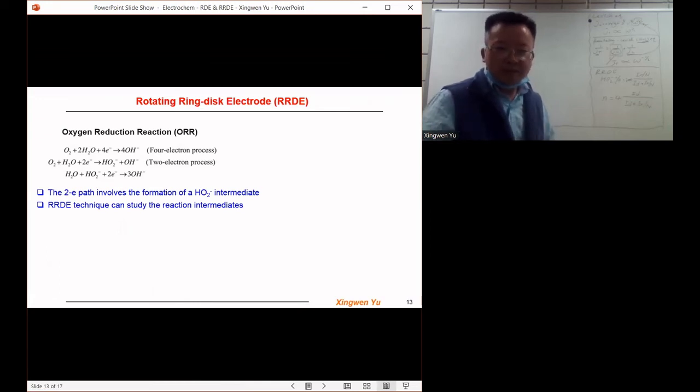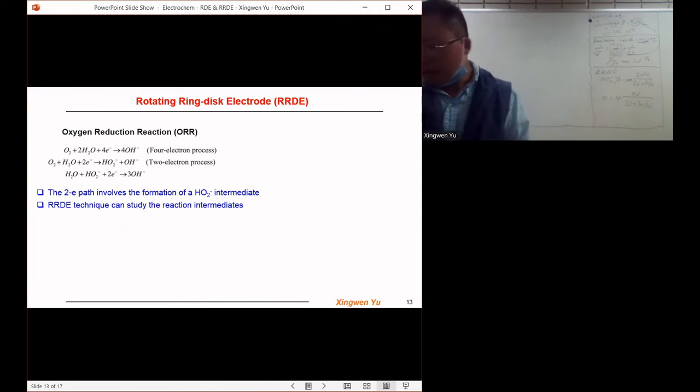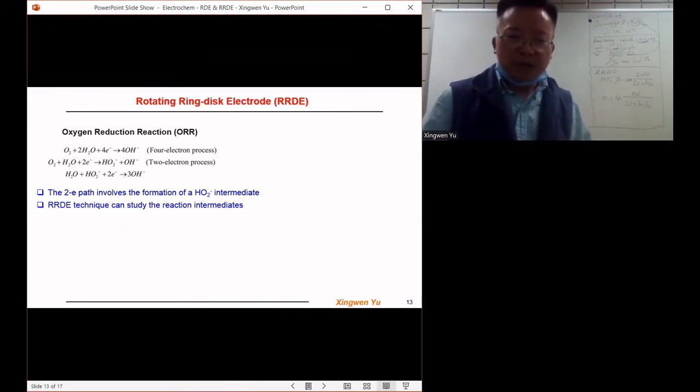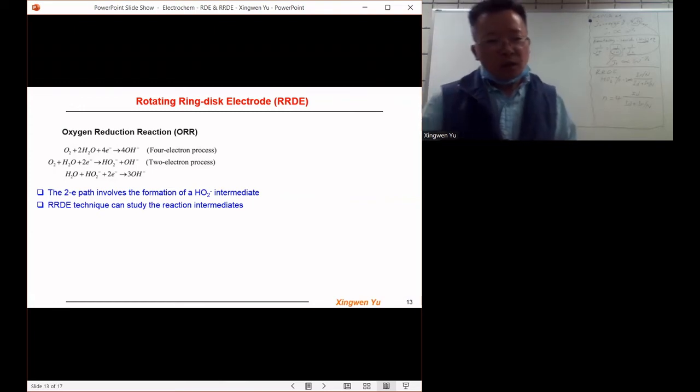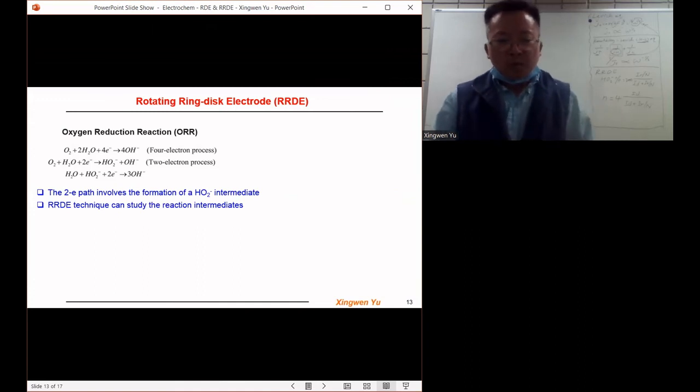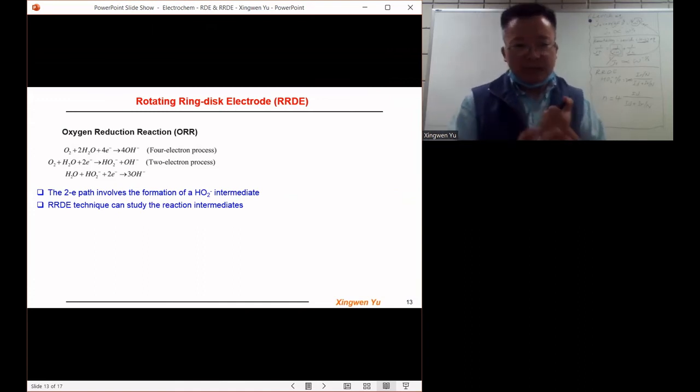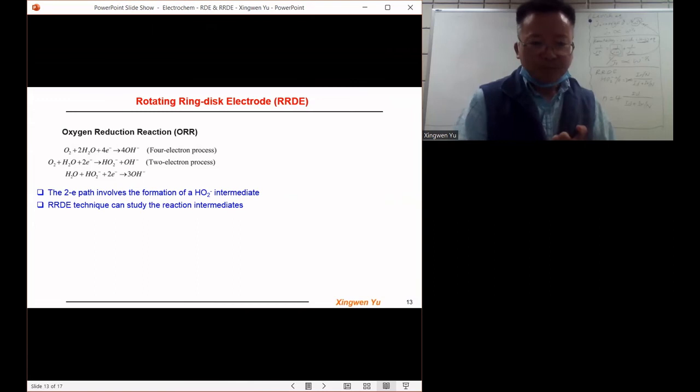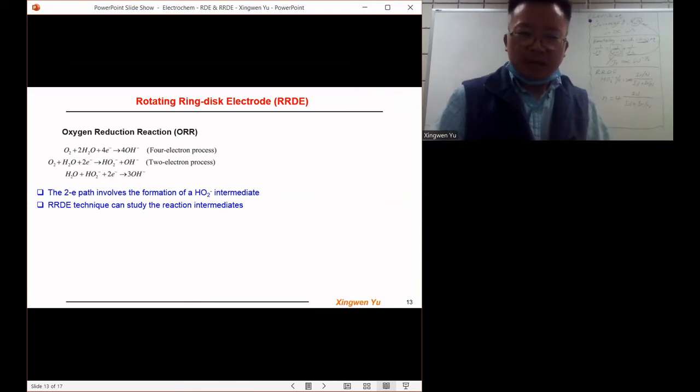RRDE. Just now I talked about the oxygen reduction reaction—if it follows the two electron pathway, there will be an intermediate involved in the reaction, the hydrogen peroxide, which is HO₂⁻, that species intermediate.